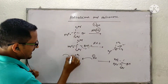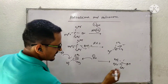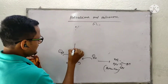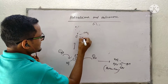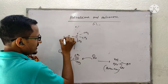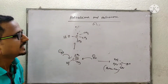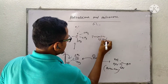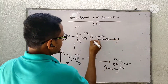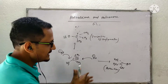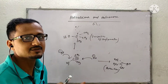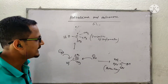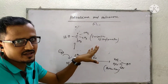But if the carbocation is attacked from the backside, you will get exactly the opposite configuration of the haloalkane — that is inversion of configuration. Since you are getting two products at a time, there will be racemization — both inversion and retention — and the two products are enantiomers of each other, non-superimposable mirror images. You get racemization but with some extra inversion.